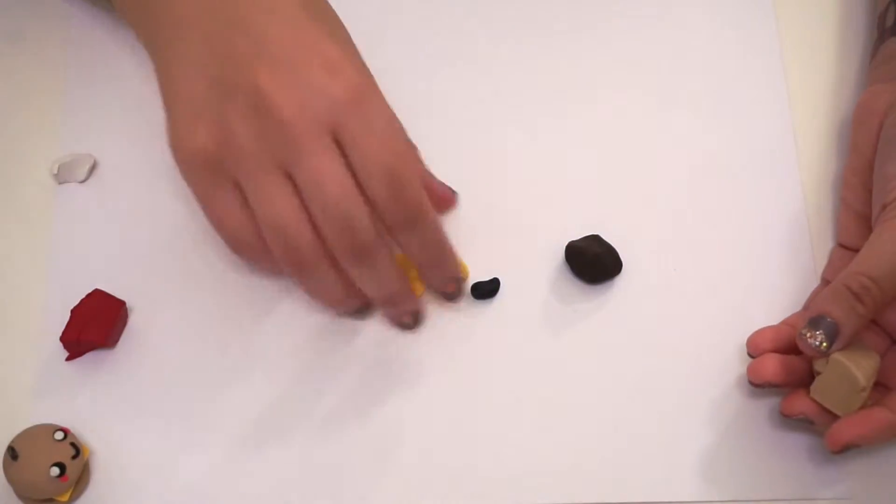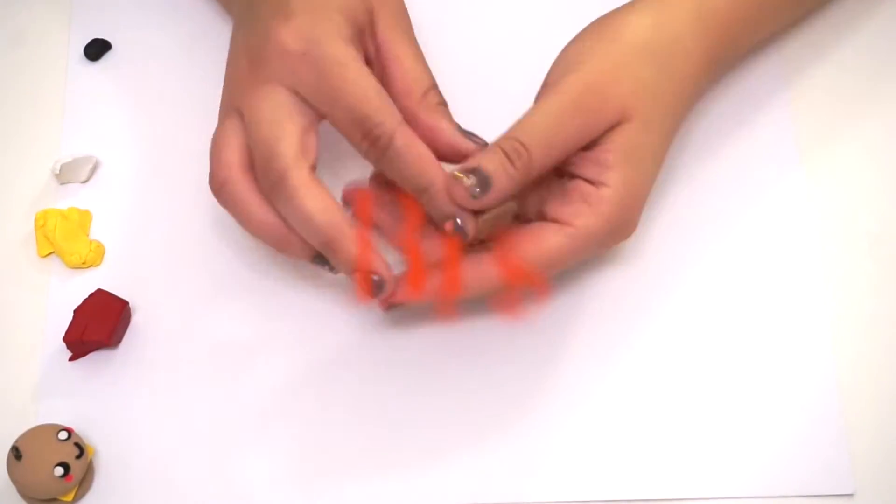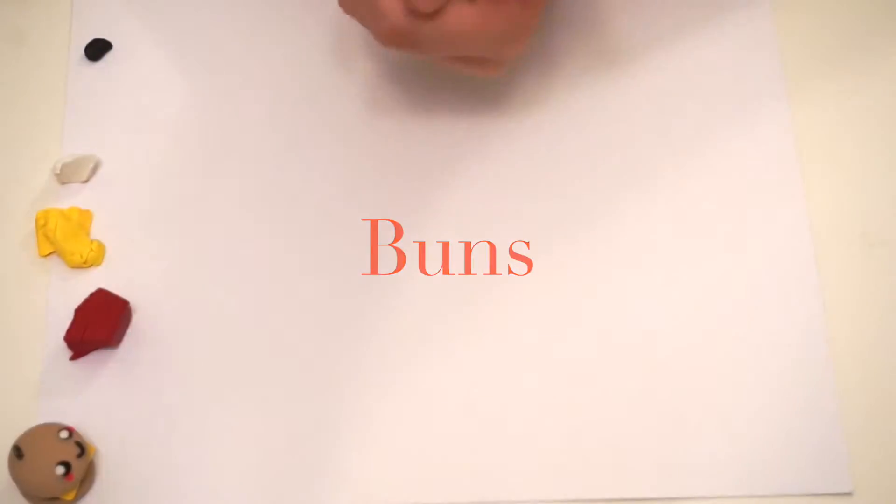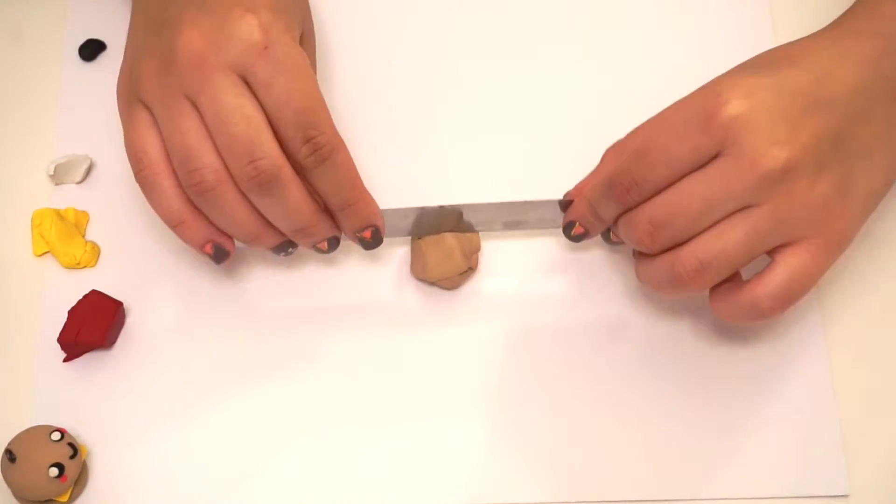So we're going to start out with some tan clay. This is to make the buns on the burger and I'm using Sculpey 3 because I feel like it's really easy to work with. A lot of people don't like it, I personally love it. You can use whatever clay you like.